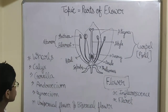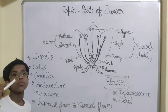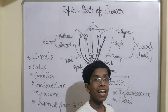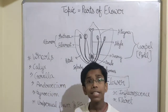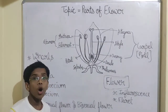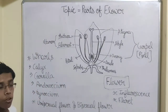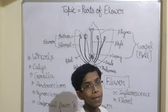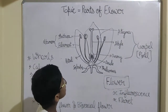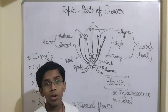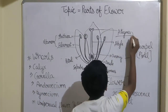Our next topic is gynoecium. Gynoecium is the innermost whorl and it is the female reproductive part of a plant. It consists of pistil or one or more carpels — pistil and carpels are the same. Gynoecium consists of pistil and carpels, and they consist of stigma, style, and ovary.